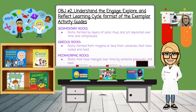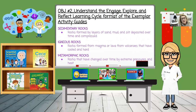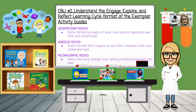Sedimentary rocks are those that are formed by layers of sand, mud, and silt deposited over time and compressed. Igneous rocks are formed from magma or lava from volcanoes that have cooled and hardened. And metamorphic rocks have been changed over time by extreme pressures and heat. However, through heating, squeezing, and weathering, rocks can continually be created and changed into a new rock — and this is called the rock cycle.